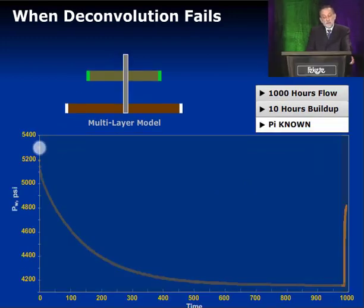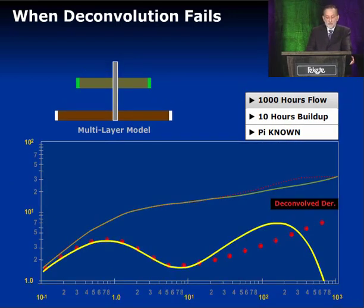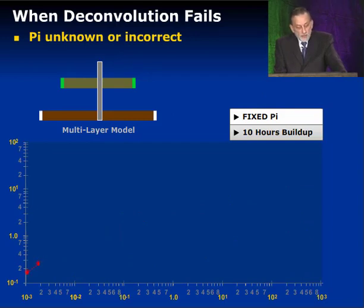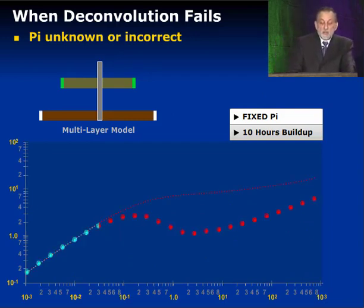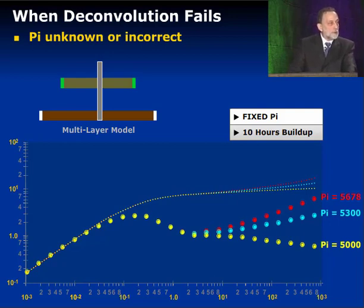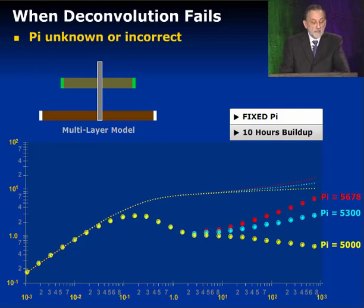What if we know the initial pressure but the buildup is too short? Can deconvolution compensate for a short buildup? The answer is no — there's the deconvolution and there is the true type curve, and they don't match. What happens when the initial pressure is wrong by a certain amount? Depending on whether I assume 5,000 psi, 5,300 psi, or 5,678 psi, I get three different derivative and type curve shapes. We don't know which is correct, and errors in the initial pressure create errors in the shape of the deconvolved result.